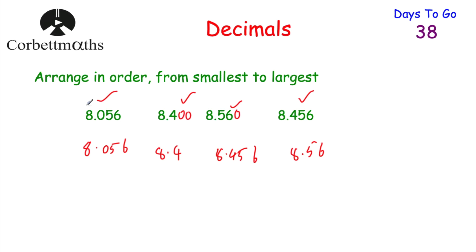Alternatively, you could look at the ones column — all eights, so that doesn't help. The tenths column gives us 0, 4, 5, and 4 — so 8.056 is smallest. Between the two numbers with 4 in the tenths, looking at the hundredths gives 0 and 5, so 8.4 is next, then 8.456, then 8.56 is the biggest. That's how to order decimals — an important skill for your GCSE maths exam.